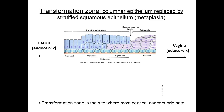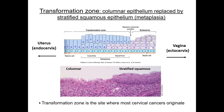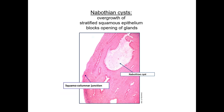Here is another cartoon illustrating this transformation, as well as an example of an H&E stain section showing this metaplasia. Very similar to other examples of metaplasia discussed — in the esophageal-cardial region and the rectal-anal junction — the cervical squamous columnar junction is the site at which most cervical cancers originate. Another change that occurs in the cervix with age is the formation of nabothian cysts. These are benign overgrowths of stratified squamous epithelium that often block the openings of glands. Interestingly, these are not linked to cervical cancer.